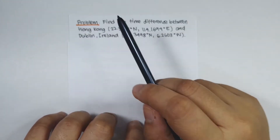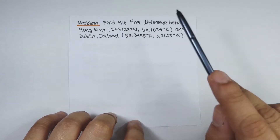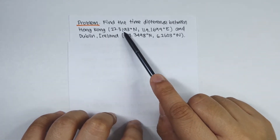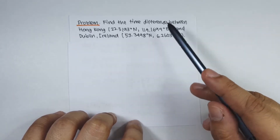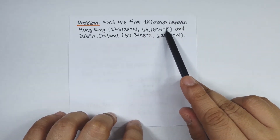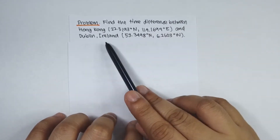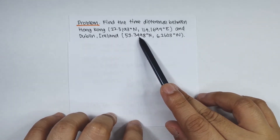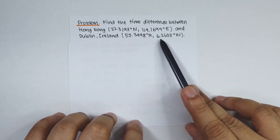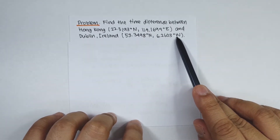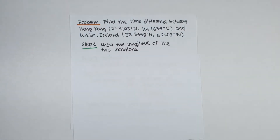Problem number one: find the time difference between Hong Kong, located at 22.3139 degrees north and 114.1694 degrees east, and Dublin, Ireland, located at 53.3498 degrees north and 6.2603 degrees west.